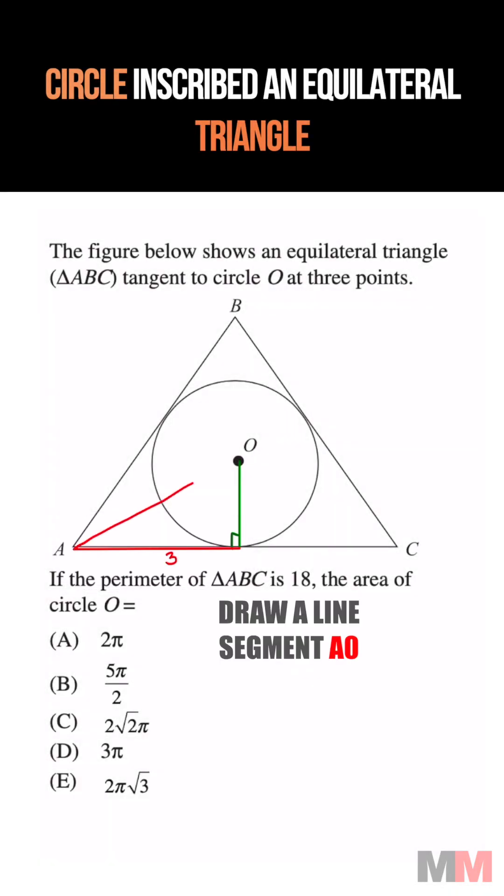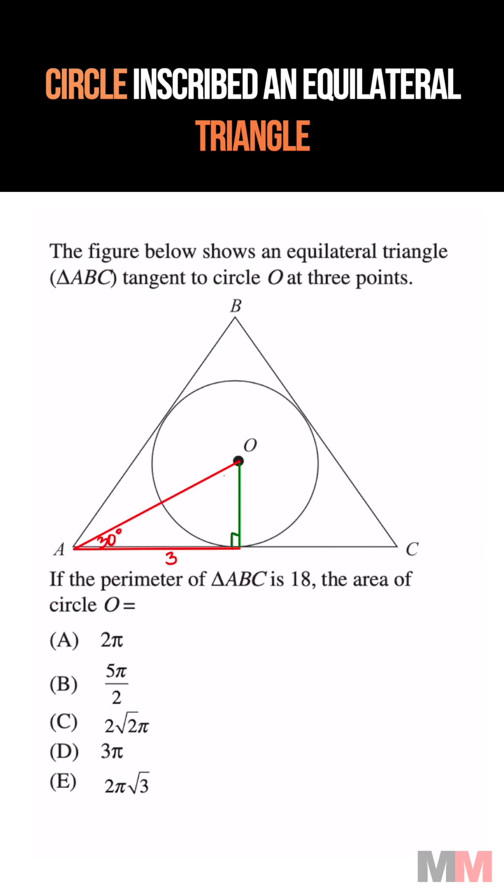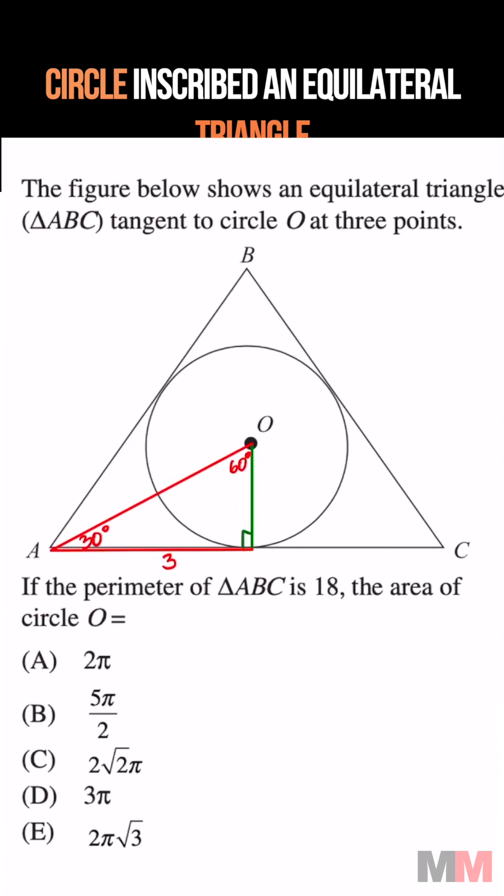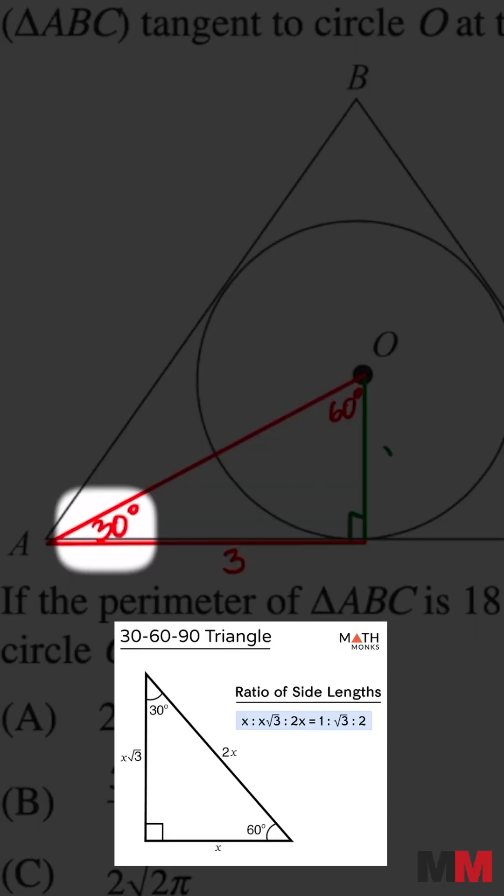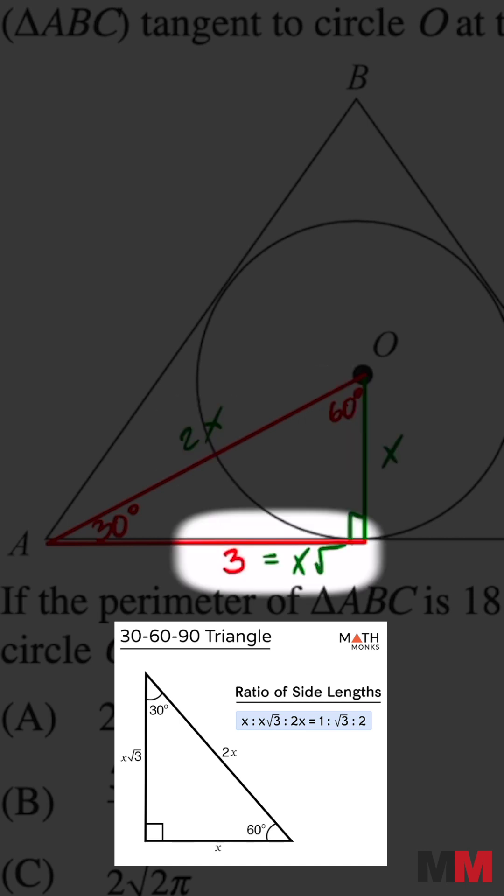Now draw line AO. In an equilateral triangle, each interior angle is 60 degrees. This is going to be 30 degrees, and now we got a 30, 60, 90 triangle, where the one across 30 degrees is going to be x, hypotenuse is 2x, and the one across 60 is x root 3.